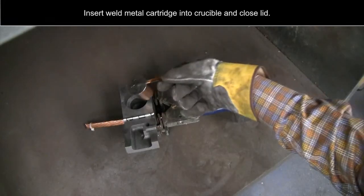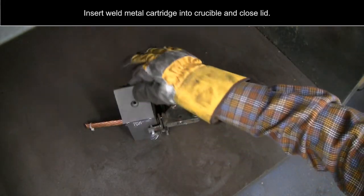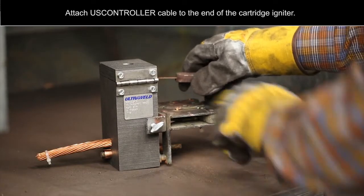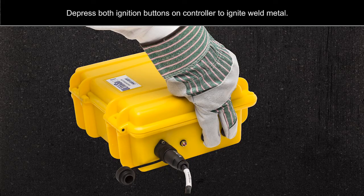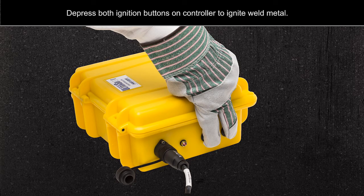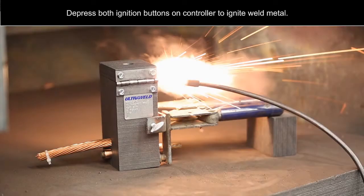Insert the weld metal cartridge into the crucible and close the lid. Attach US controller cable to the end of the cartridge igniter. Depress both ignition buttons on the controller to ignite the weld metal.